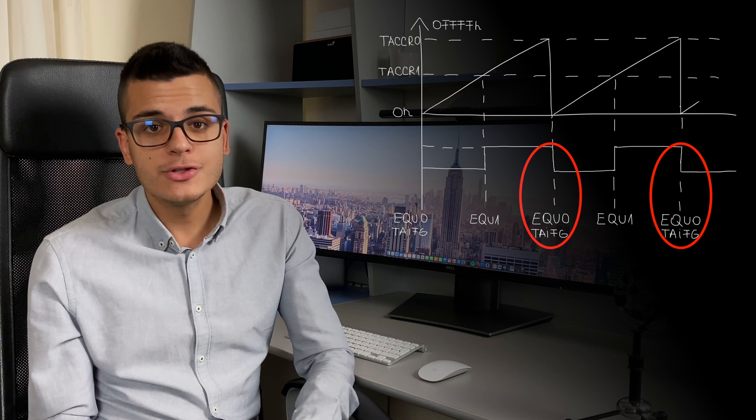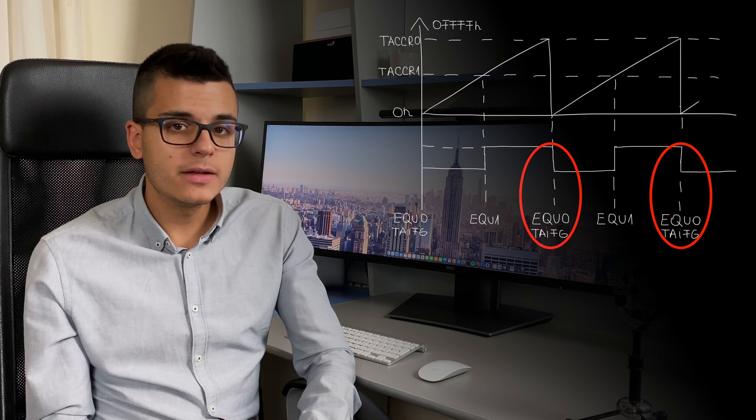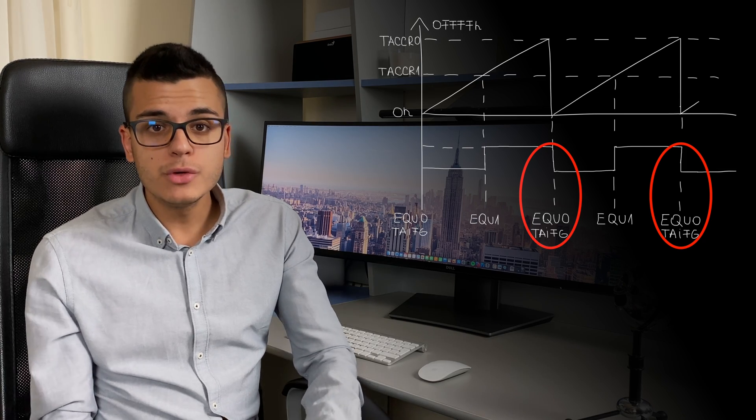This is how the first edge of the signal, which is variable in time, is generated. The other edge, as already mentioned, is generated by the CCP when the value set in the timer's register is reached by the timer. So with the CCP module, you will first have to set the bits for it to work in the compare mode and then also set the output mode. This means that once you set everything up, the capture and compare module will be generating the PWM signal automatically without any extra intervention.